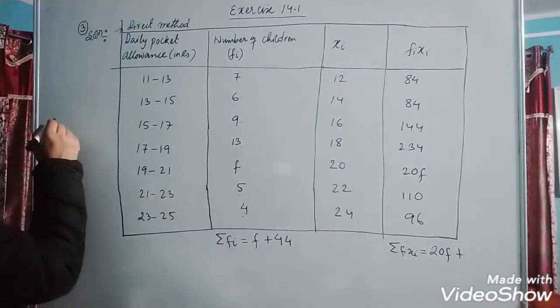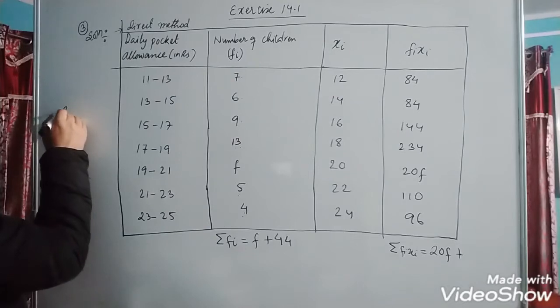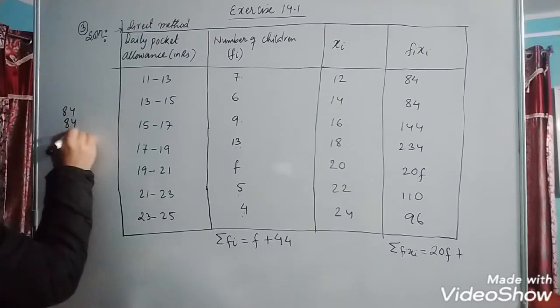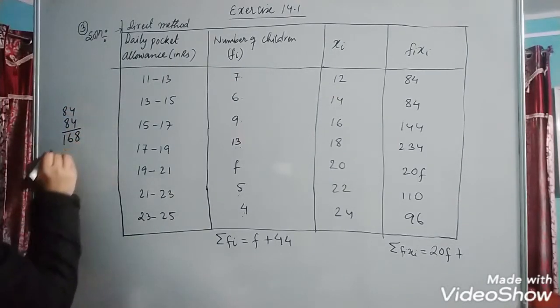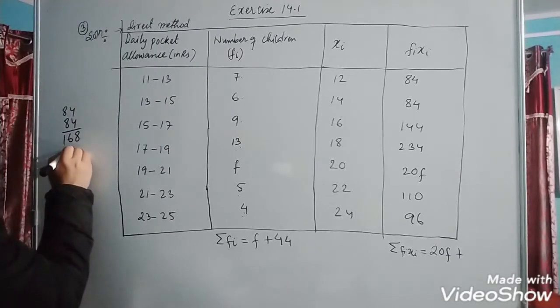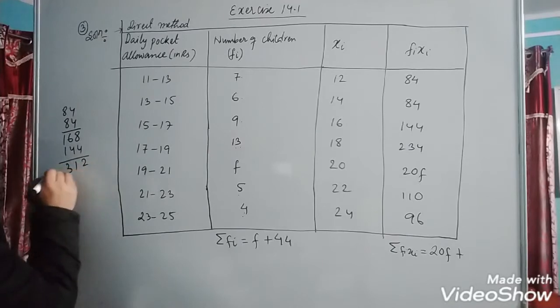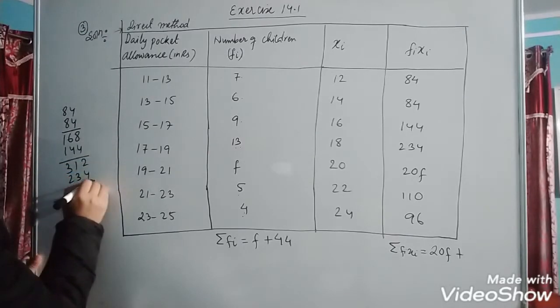Plus 144 gives 312. Plus 234 gives 546. Plus 110 gives 656. Plus 96 gives 752. So summation fi xi equals 20f plus 752.